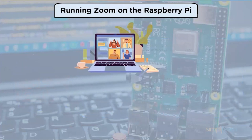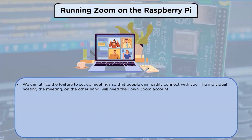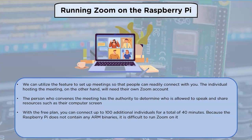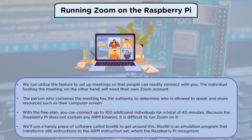Running Zoom on the Raspberry Pi: we can set up meetings so people can readily connect. The meeting host needs their own Zoom account and has authority to determine who can speak and share resources. With the free plan, you can connect up to 100 individuals for 40 minutes. Because the Raspberry Pi lacks ARM binaries, we use Box86 — an emulation program that transforms x86 instructions to the ARM instruction set that the Raspberry Pi recognizes.